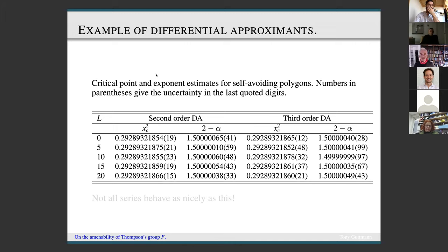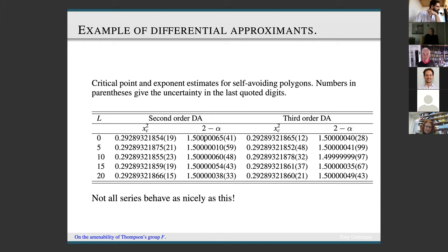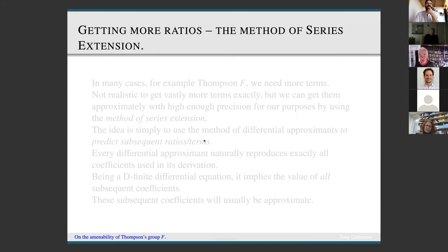Applying the method to counting self-avoiding polygons — an unsolved problem — the second- and third-order differential approximants give estimates of the square of the radius of convergence and the exponent, with one through eight approximants all agreeing to nine digits, and the exponent being 1.500 — strongly suggesting exactly 3/2. Unfortunately not all series behave this nicely. If Thompson's group F behaved as well as this, there'd be no doubt we'd confidently conjecture its asymptotic behavior, but we can't and are reliant on the ratio method and variants.